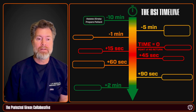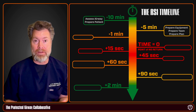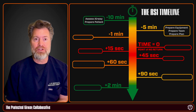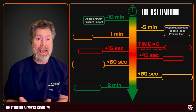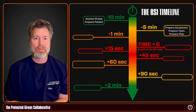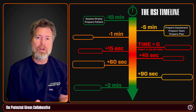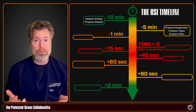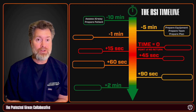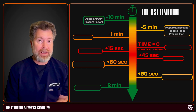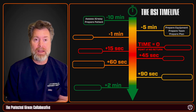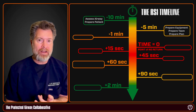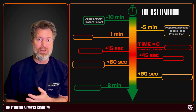Now move on to preparing your equipment. This happens usually between 10 and 5 minutes before intubation. Make sure you have suction available and working with a large-bore catheter. Have a BVM connected to oxygen and available. Set up everything you need to intubate: your laryngoscope — whether video or direct — a bougie as a backup tool, a couple of different sizes of ET tubes, a stylet, lubrication, and a 10cc syringe to inflate the cuff. You also need a superglottic airway and a surgical airway kit nearby, even if not on the table.